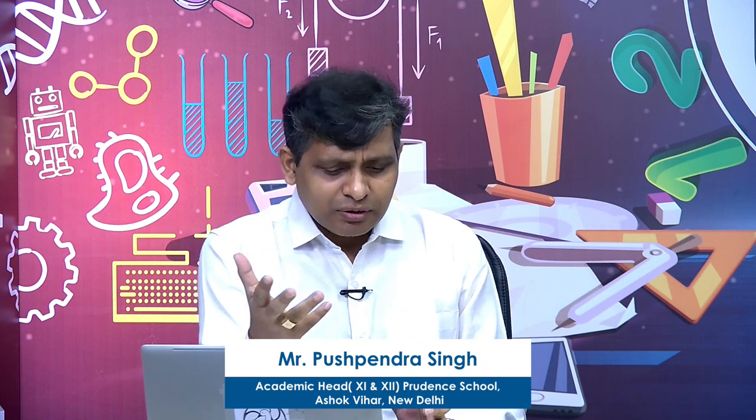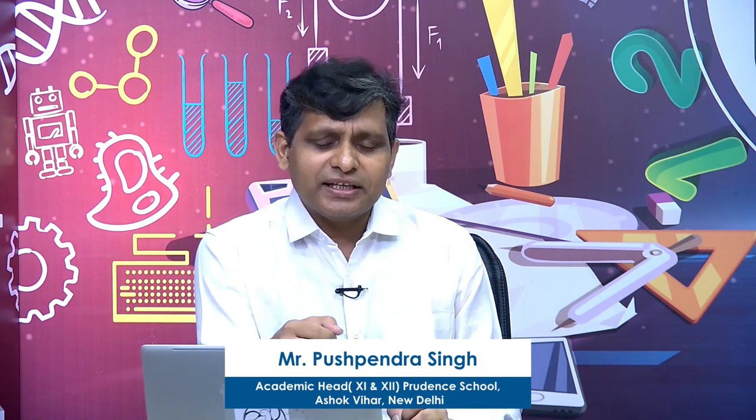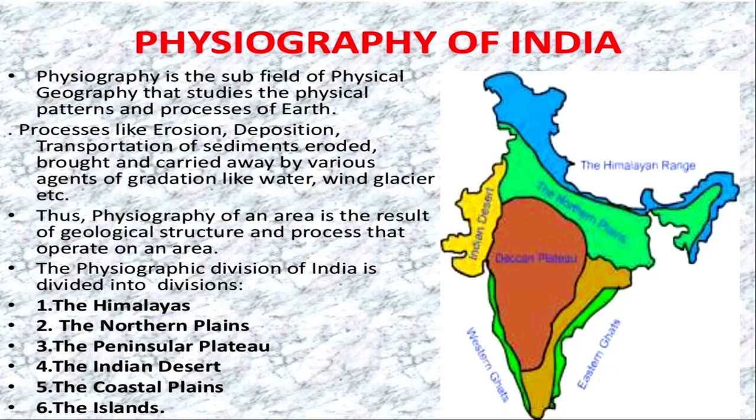This chapter deals with the geological features like mountains, plains, plateaus, and coastal plains. India has been divided into 6 physiographic divisions: the Himalayas, Northern Plains, the Peninsular Plateau, the Indian Desert, Coastal Plains, and the Island Groups.